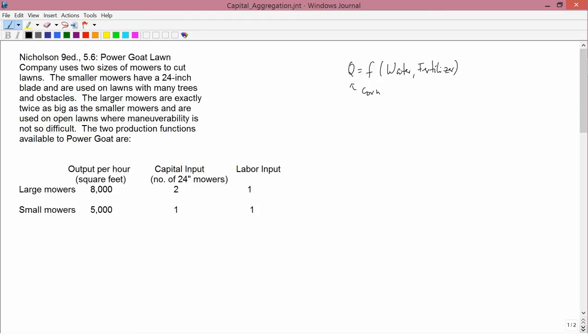The textbook, and essentially all other textbooks in intermediate microeconomics, instead uses their generic production function Q equals F of L and K, where L is labor and K is capital.